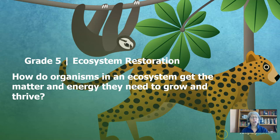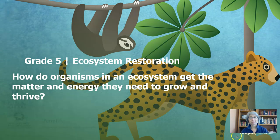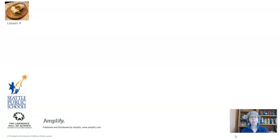This unit is called Ecosystem Restoration and we have been building our learning to help us answer this question: How do organisms in an ecosystem get the matter and energy they need to grow and thrive? Before we get started, let's review lesson four.